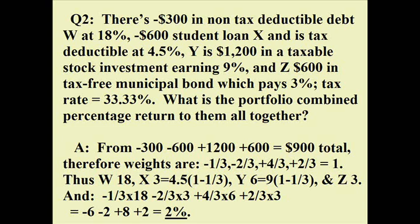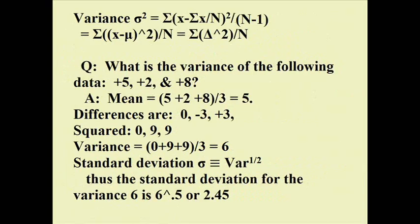We take the weights and the after-tax costs or returns and weight them together: −1/3 × 18, minus 2/3 × 3, plus 4/3 × 6, plus 2/3 × 3, giving us −6 − 2 + 8 + 2, which equals an average return to the entire portfolio of 2 percentage points.